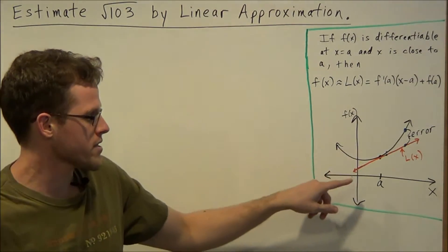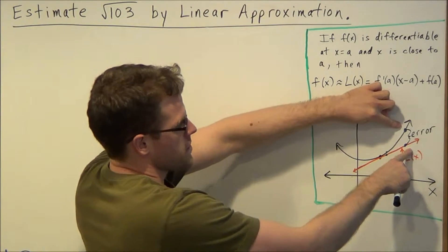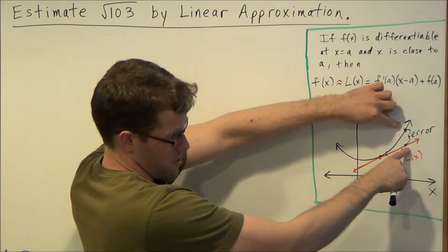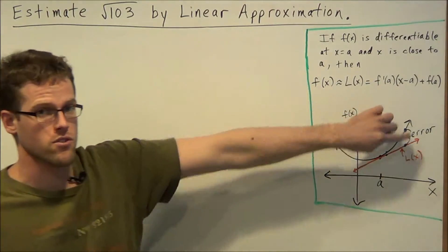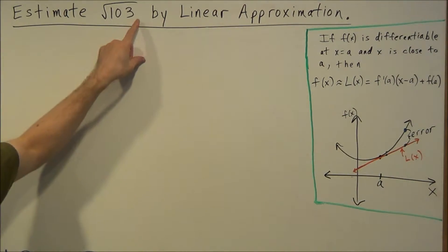However, if you pick a point that's far away from the point of tangency, then it's going to generate a bigger gap and there's going to be more error between your approximation and the actual answer. So the key is that we have to pick out an a value that's very close to the one that we care about.